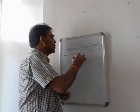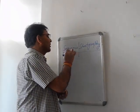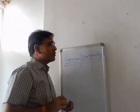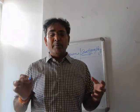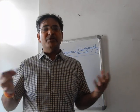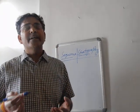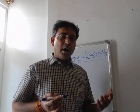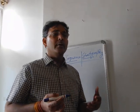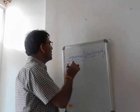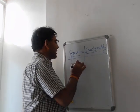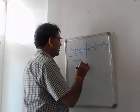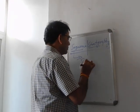Sequence stratigraphy consists of two terms: sequence and stratigraphy. Sequences are the conformable stratigraphic successions which are genetically related to each other and are bounded by unconformities or their correlative conformities. Sequences are of various types, and these various types of sequences are known as system tracts.